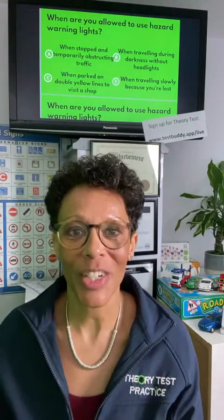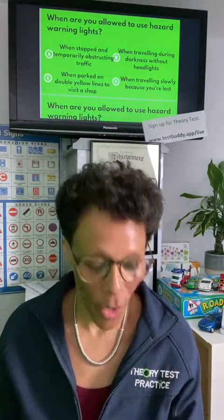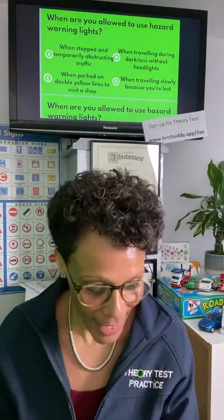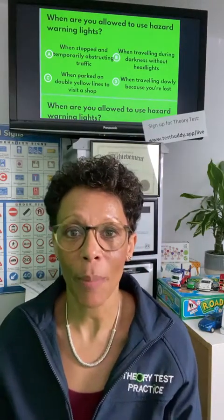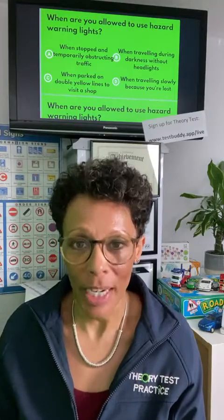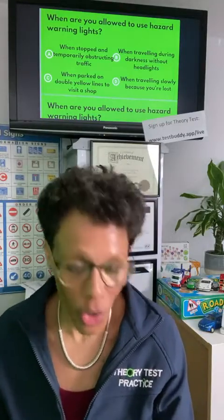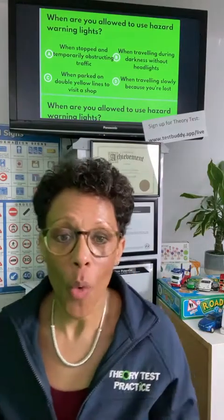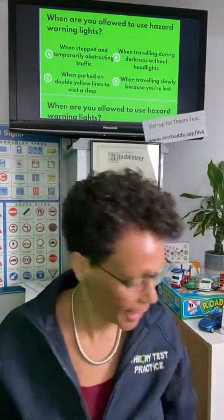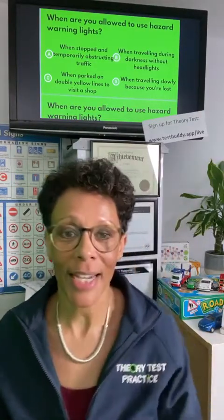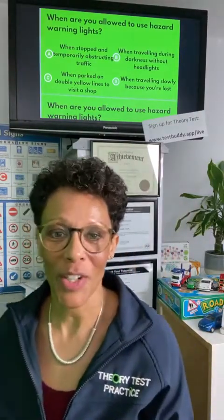Is it A: when you've stopped and are temporarily obstructing traffic; B: when travelling during darkness without headlights; C: when parked on double yellow lines to visit a shop; or D: when travelling slowly because you're lost? When are you allowed to use hazard warning lights? I'll give you a few seconds to answer.